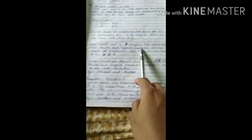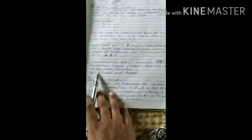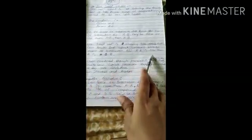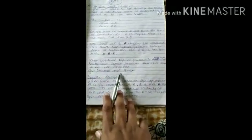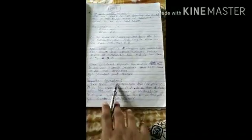Non-ideal solution showing positive deviation: When force of interaction between A-B is less than A-A and B-B, they show positive deviation. What is positive deviation? When obtained vapor pressure is more than Raoult's law vapor pressure, it is said to be positive deviation. Example: alcohol and acetone.